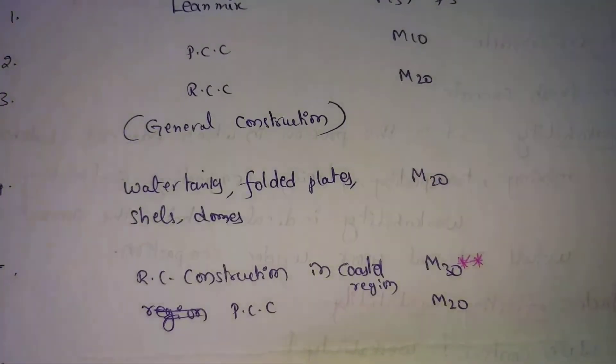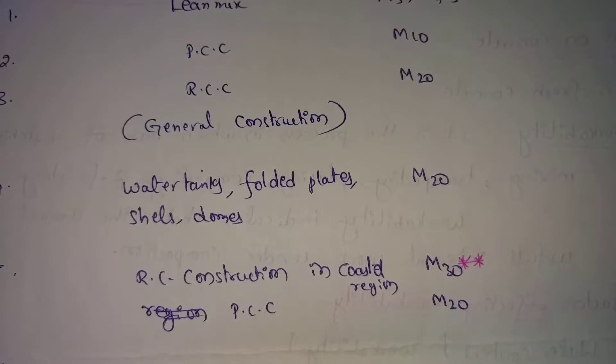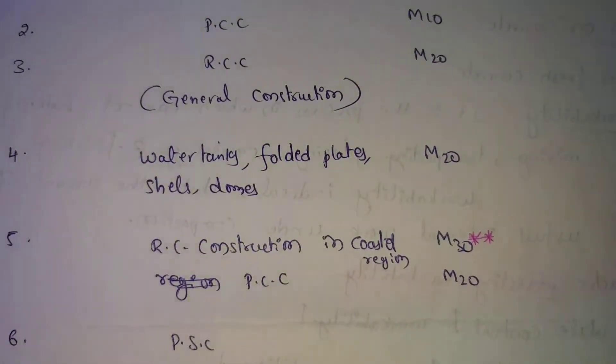Next, RC construction in coastal region. In coastal region, M20 for PCC, plain cement concrete, and M30 for RCC. Why coastal region needs high strength concrete? M30 means high strength concrete. Here, salt water is in coastal region. Salt is present. General construction mix proportions, if you use them, cracks form because of salt. So that's why high strength concrete is used in coastal region.